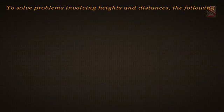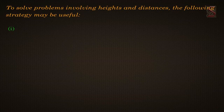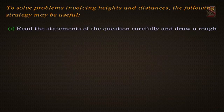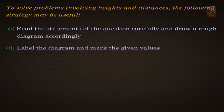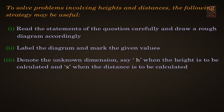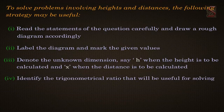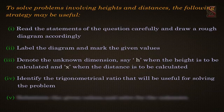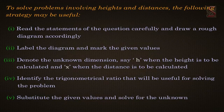To solve problems involving heights and distances, the following strategy may be useful. First, read the statement of the question carefully and draw a rough diagram accordingly. Second, label the diagram and mark the given values. Third, denote the unknown dimension — say h when the height is to be calculated and x when the distance is to be calculated. Fourth, identify the trigonometrical ratio that will be useful for solving the problem. Fifth, substitute the given values and solve for the unknown.